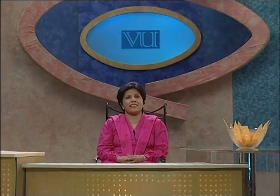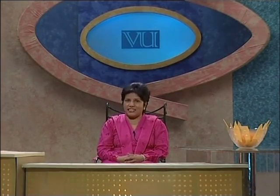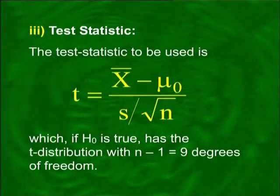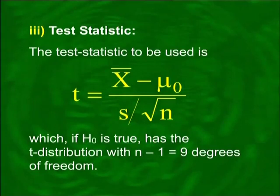Since the alternative says 'not equal to 66,' there are two possibilities: either less than 66 or more than 66, so it will be a two-tailed test. The second step is the level of significance, which we set to 0.05. The third step is the test statistic: x-bar minus mu over s over square root of n, where s uses the denominator n minus 1. It has been mathematically proved that this quantity follows the t-distribution having n minus 1 degrees of freedom.